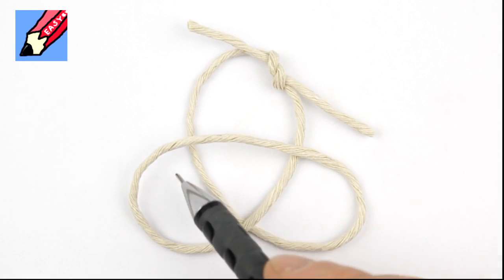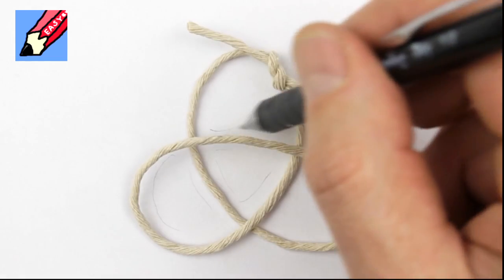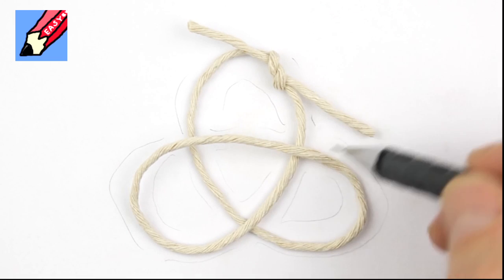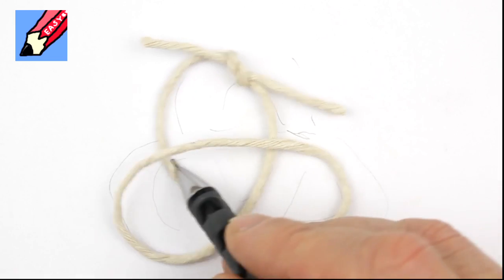A snake eating its tail is just like a piece of string tied into a circle, so it's easy to curl the string up into the shape you want to draw and sketch in some guidelines on the paper.